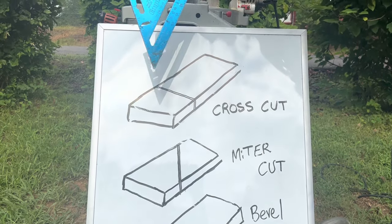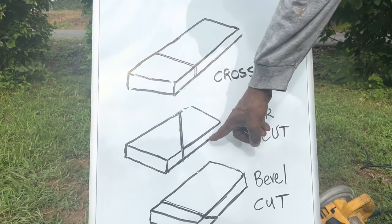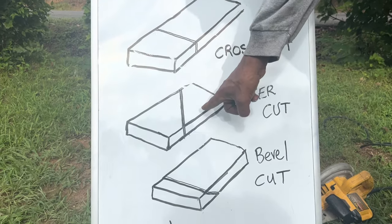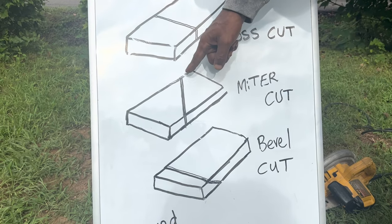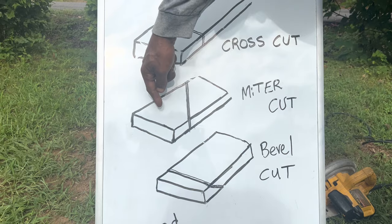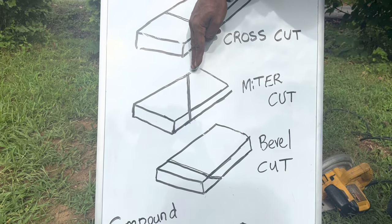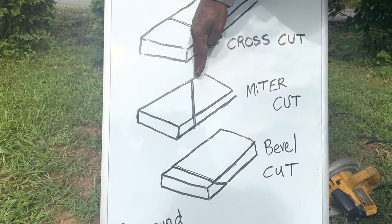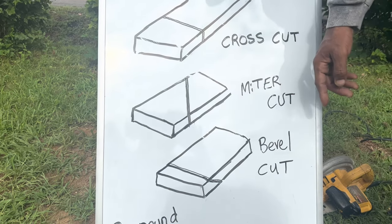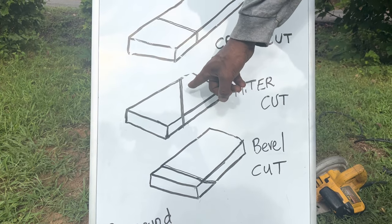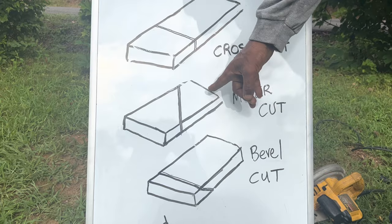You can use this speed square to lay it out — I'll show you a little bit later. Now this is a miter cut. If you look at this miter cut, it's a line laid out at an angle on the face of your lumber, and your saw will cut across the face and through the edge. If you cut your lumber like this, this is a miter cut.